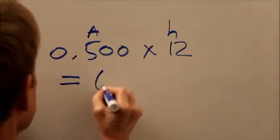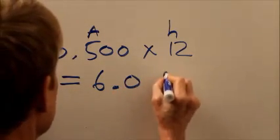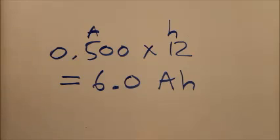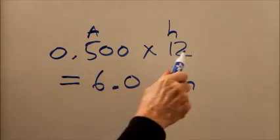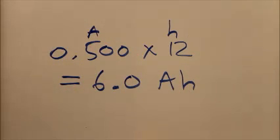We're justified in going to 2 significant digits because our least accurate quantity here, 12 hours, is expressed to 2 significant digits or significant figures.